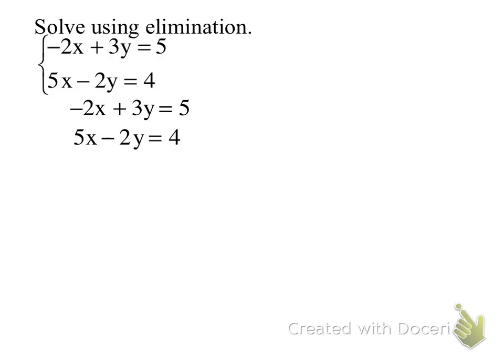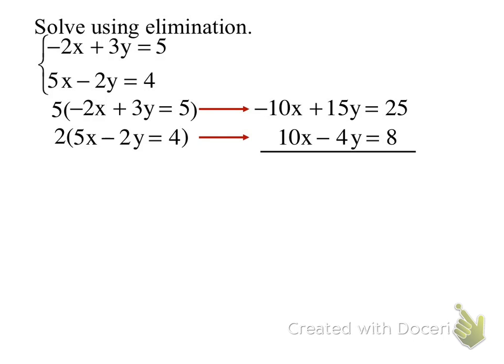10. So what do I have to multiply the top equation by? By a positive 5. And that becomes negative 10x plus 15y equals 25. And what do I have to multiply the bottom equation by to get that x to be the opposite of negative 10x? Positive 2. So now I multiply 2 times 5x equals 8. And now what I've done is I've manipulated both equations so I can make my x's opposite.